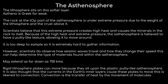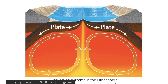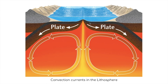It is thought that currents in the Earth's inner layers cause the tectonic plates to move. This is likened to convection — the transfer of heat by the movement of molecules. Here we have a diagram of the mantle and the layers above it, showing the two lithosphere plates and the asthenosphere below. Convection currents occur in the asthenosphere: cooler parts sink and hotter parts rise because they are lighter, and this cycle repeats continuously, causing the plates to move.